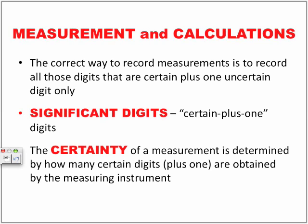Measurement and calculations. The correct way to record measurements is to record all those digits that are certain plus one uncertain digit only. That whole certain plus one digit is known as a significant digit, and the certainty of a measurement is determined by how many certain digits plus one are obtained by the measuring instrument.